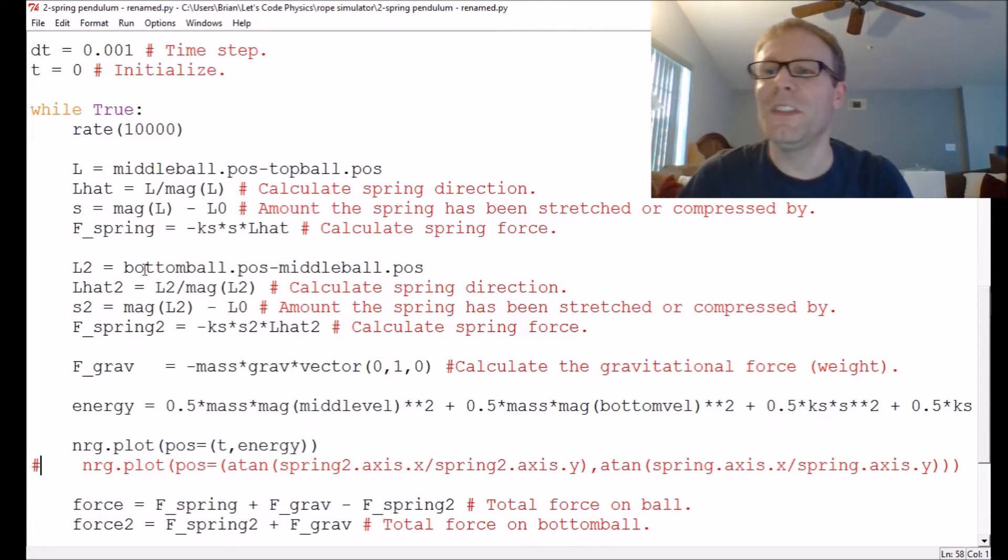And so for each step in the loop, it needs to calculate the length of the top spring. That's the spring between the middle ball and the top ball. It then has to calculate the unit vector for that direction. So that's just taking the vector that we calculated up here and dividing it by its magnitude. Anytime you divide a vector by its magnitude, you get a unit vector because by definition, that new vector, that L hat is going to have a magnitude of one.